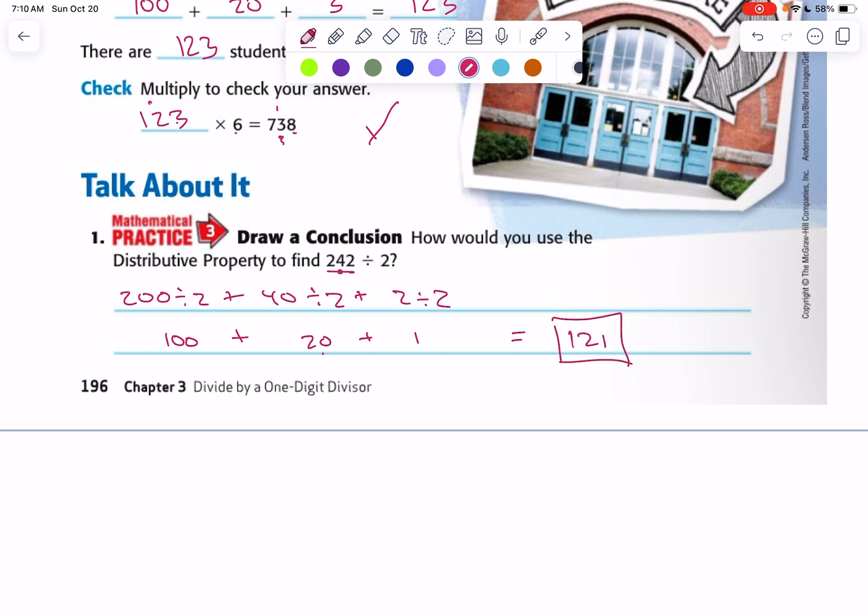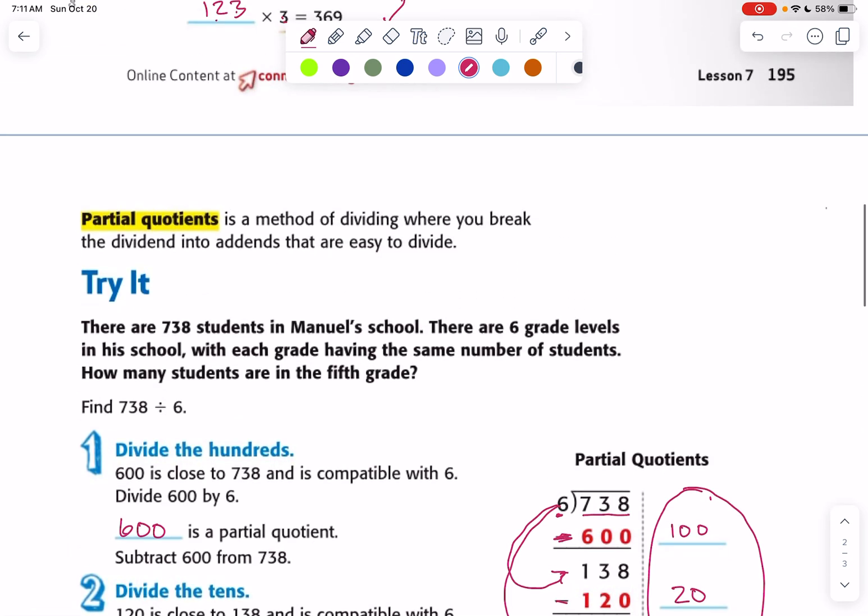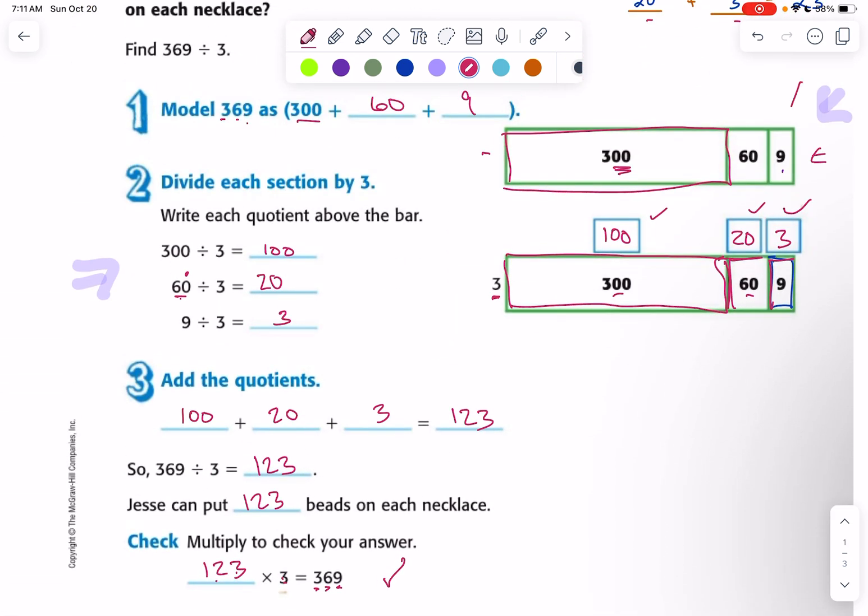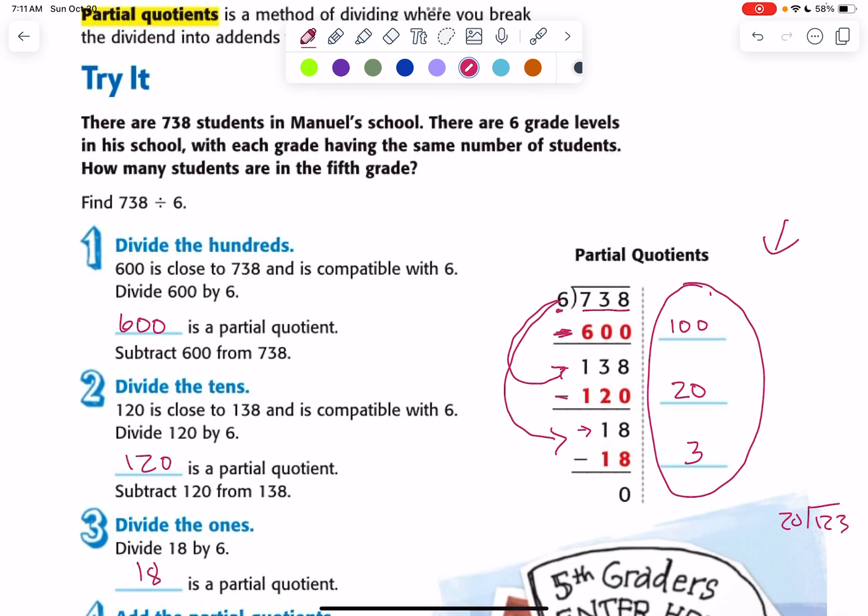So basically, break your dividend down into the value of each place. Remember it's dividend divided by divisor. Go try some on your own. Have fun with, you can use distributive property. You can use a combination of distributive property and area model. Or you can try out this partial quotients if that feels good to you. Check your work. Work with a friend if you wish. Just remember to stay on task. Or I'm here to answer your questions if I'm not working with someone else. Let's go.